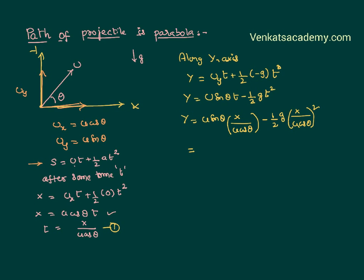What happens? I can simplify further. This u and u can be cancelled. So I can write sin theta by cos theta, which is tan theta times x, minus g by 2u squared cos squared theta times x squared. This is the equation that I have got for the displacement of the body along the y-axis.